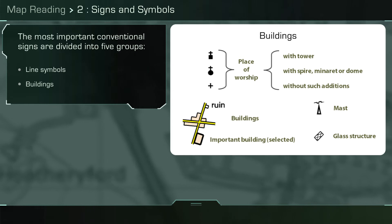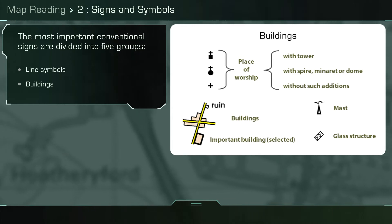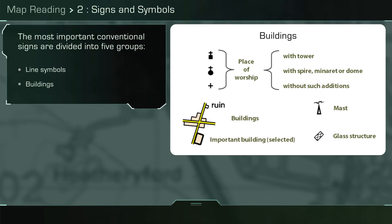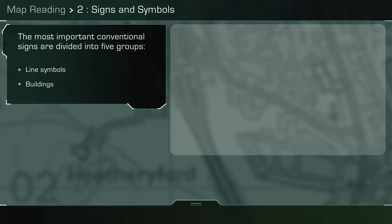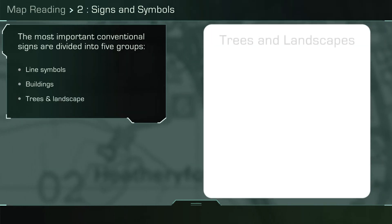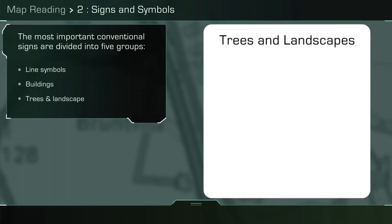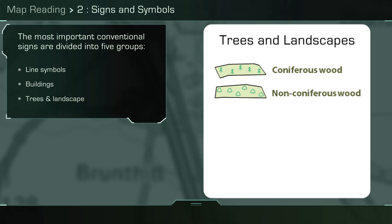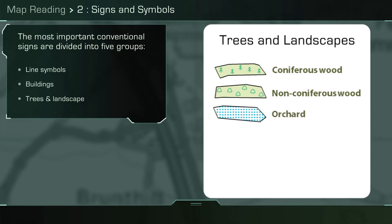Large built-up areas are usually shaded because there is not enough room to include individual buildings. Trees and landscape provide most of the color on maps.